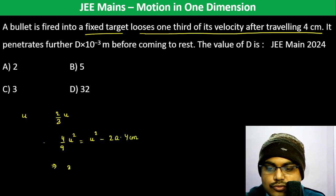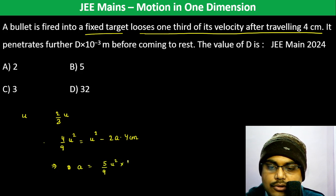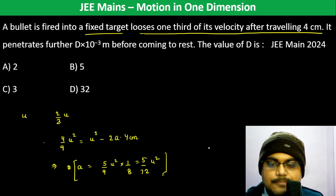So A becomes 5/9 U² into 1/8, so 5/72 U² is the acceleration.